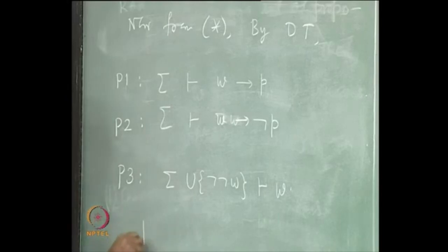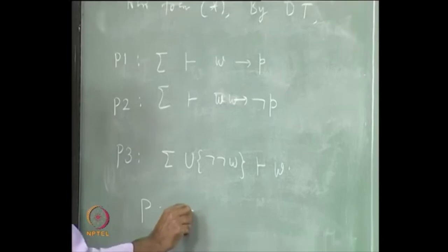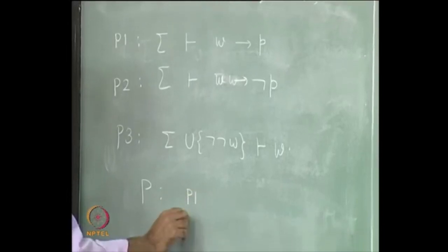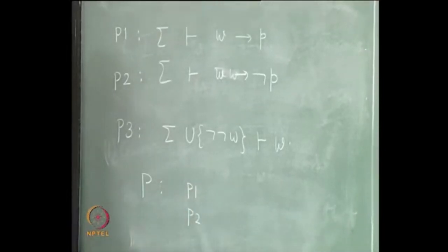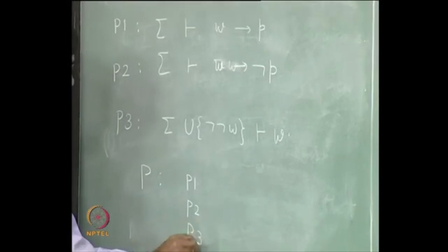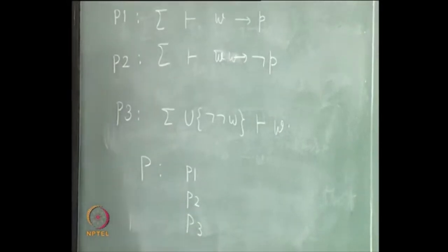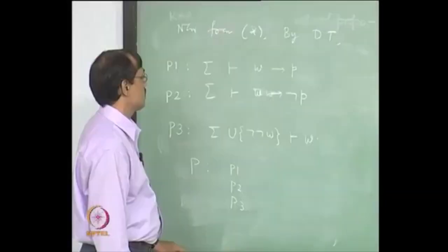Now you construct the proof p. How does it look? You take p1, next p2, next p3 — next what do you do?